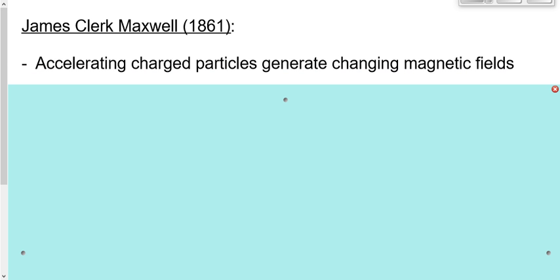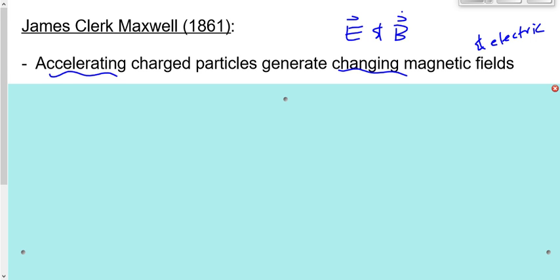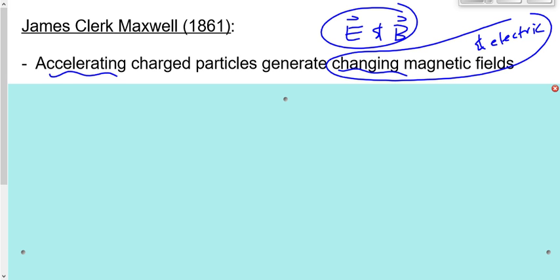We know that a stationary charged particle will generate an electric field. We know that a moving charged particle will generate a magnetic field and an electric field. But an accelerating charged particle will generate not just an electric and a magnetic field — an accelerating charged particle will generate a changing magnetic and electric field. That's key.